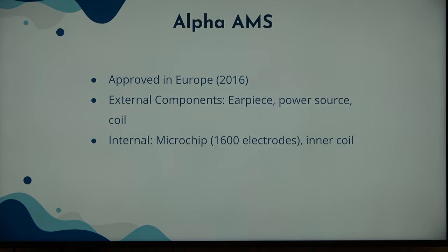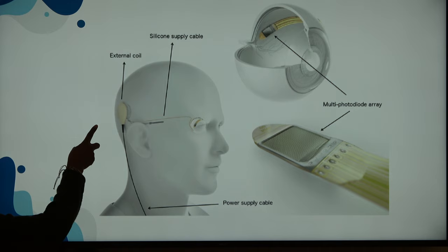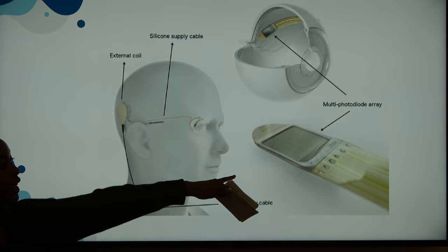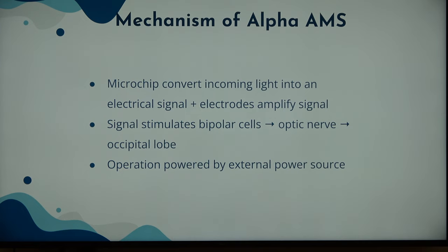Here is a photo of the entire device. This is the earpiece that goes behind your ear — it connects the external parts to the internal parts. And that is how the microchip will look in your eye, with its 1,600 electrodes. The mechanism is actually quite similar to Argus II: the microchip acts as a photoreceptor, takes the light you see, and converts it into an electrical impulse sent to the bipolar cells, to the ganglion cells, down the neural pathway, through the optic nerve, then to the visual cortex where it is processed.